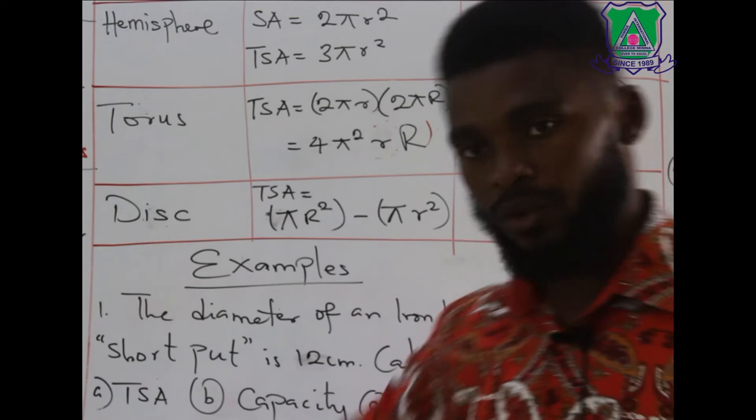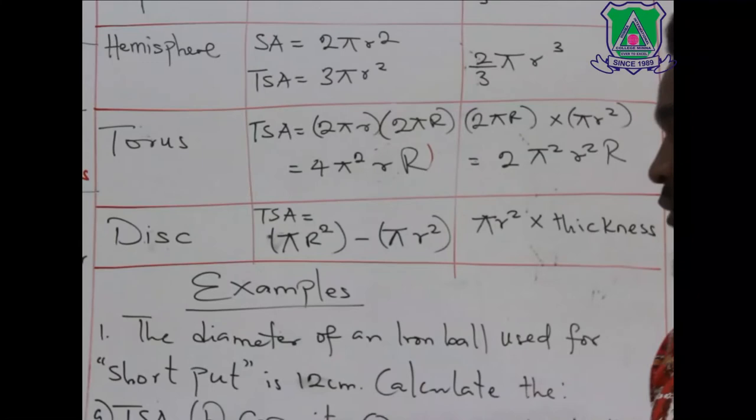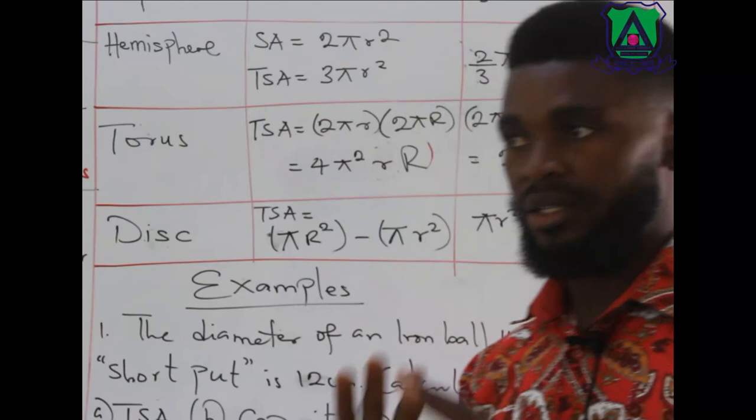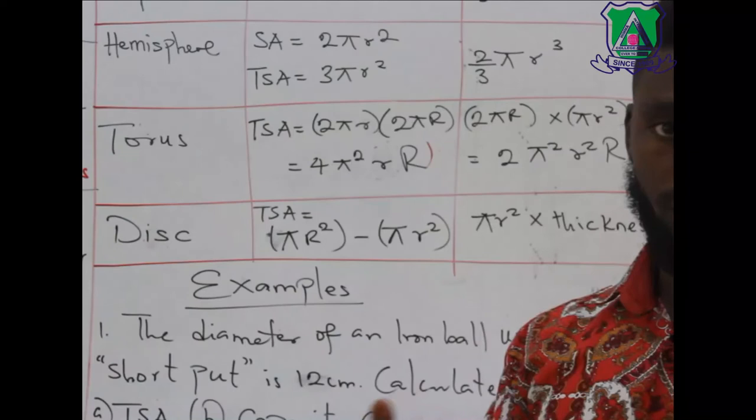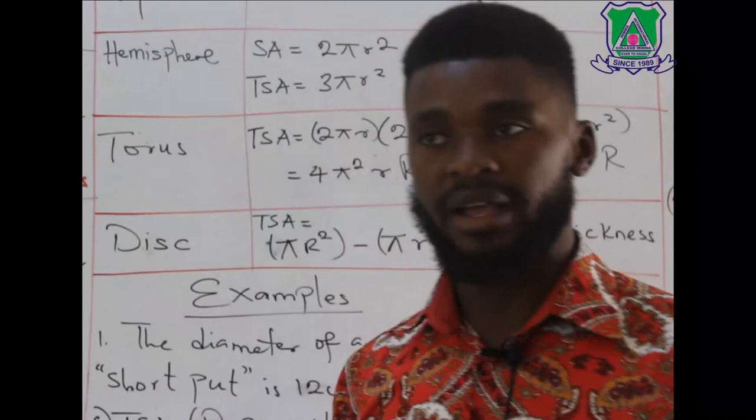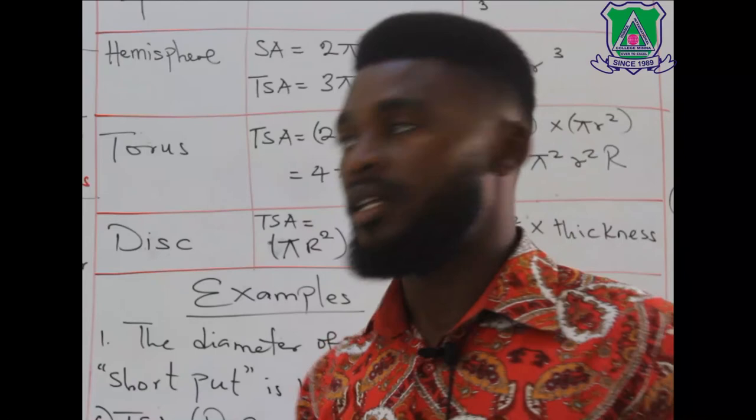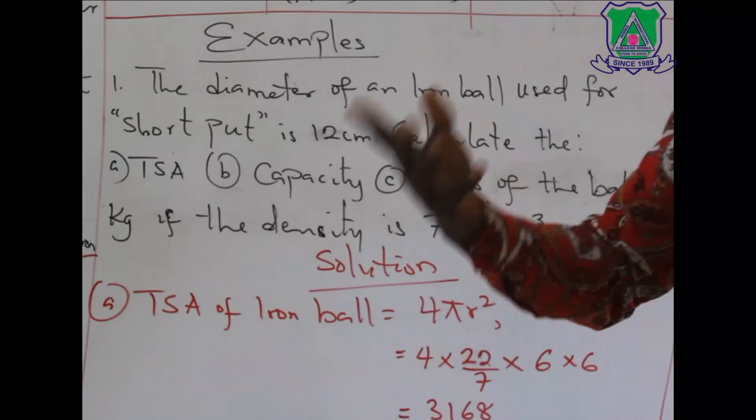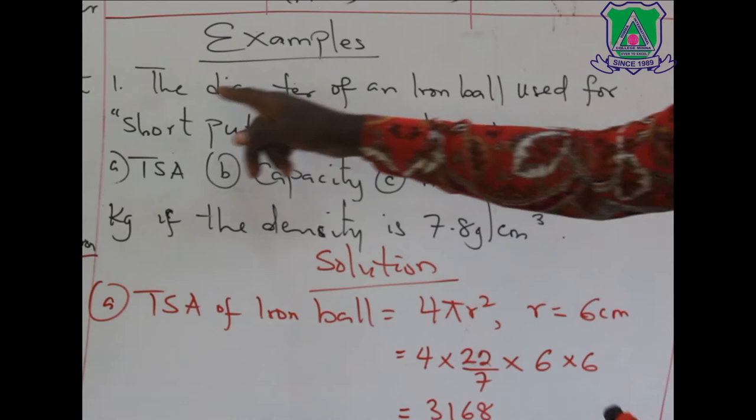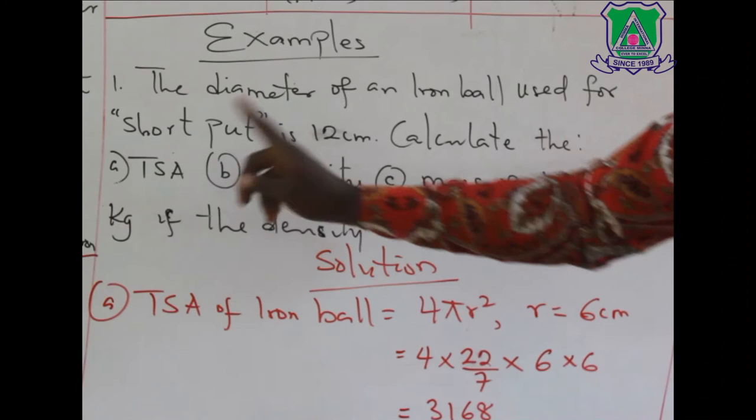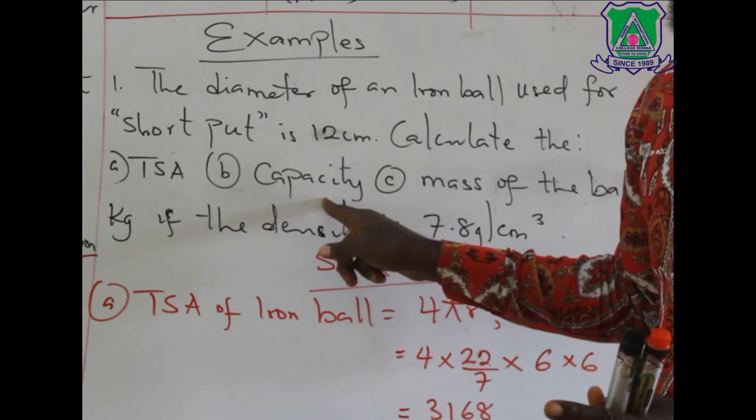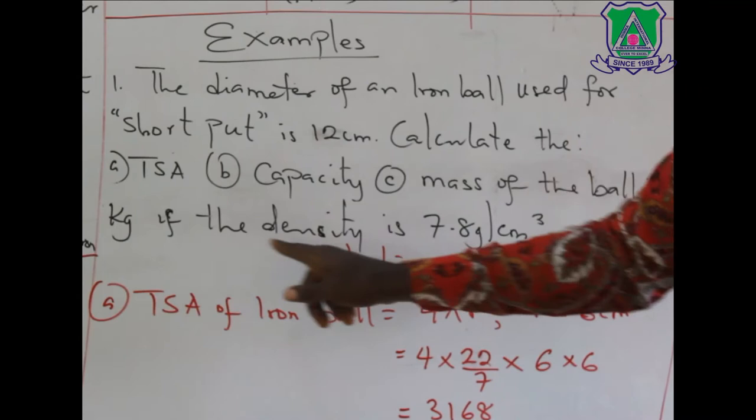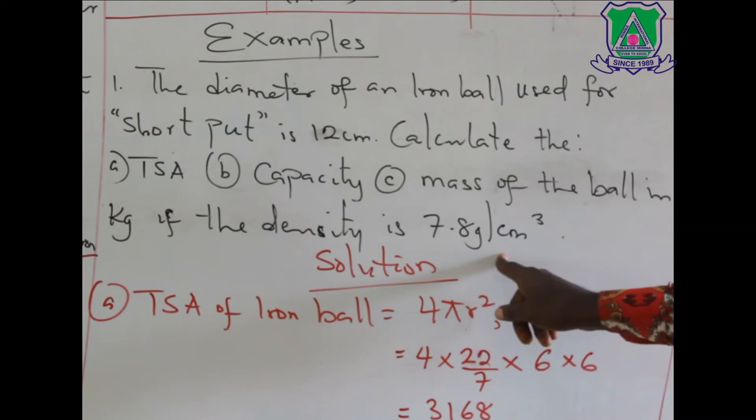We are going to do one example that will cover hemisphere. And when we are doing it, we'll do both the surface area, the volume, so that we know that the sphere is over. Then I'll give you assignments in your Schoology. Then after that, next video, we'll be doing examples on hemisphere, torus, and disc, if time permits. Now, let's move to example. The diameter of an iron ball used for shot put. You know the game of shot put? Of course, you have learned it in your PHE. It's 12 cm. Remember, we will say diameter. Calculate the first, total surface area. Second, capacity. And of course, you can't get the capacity without getting a volume. I hope you understand this. Mass of the ball in kg. If the density is 7.8 gram per cm³. Do you understand this? Solution.